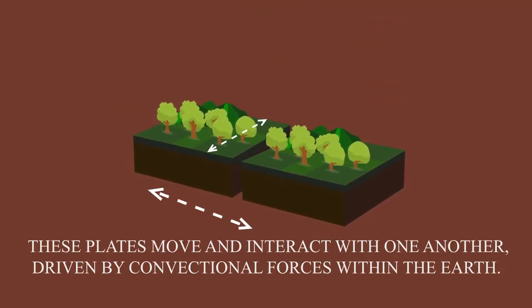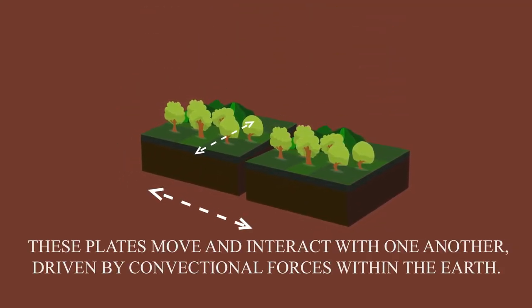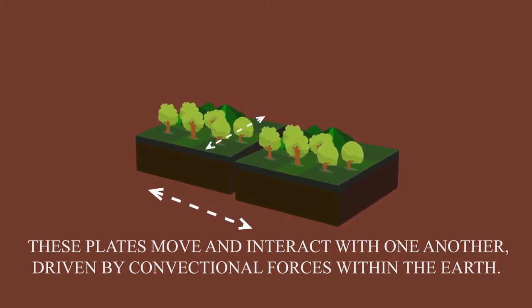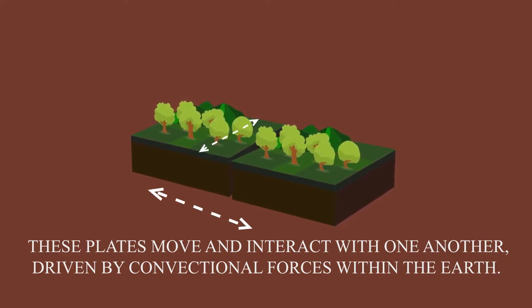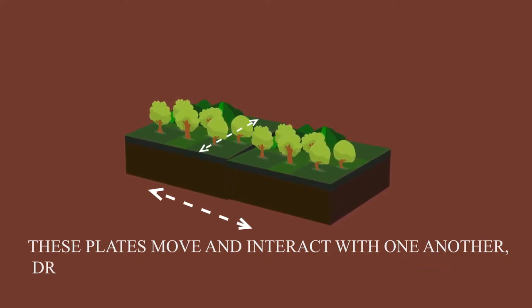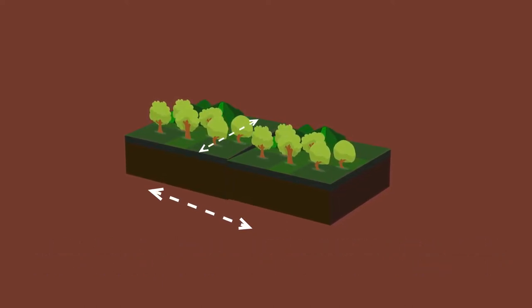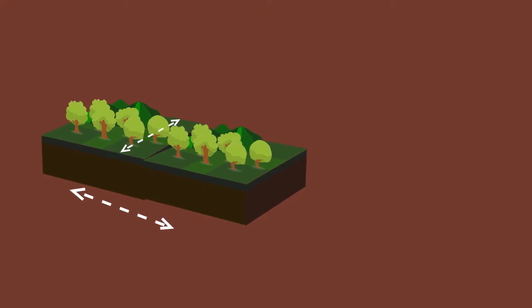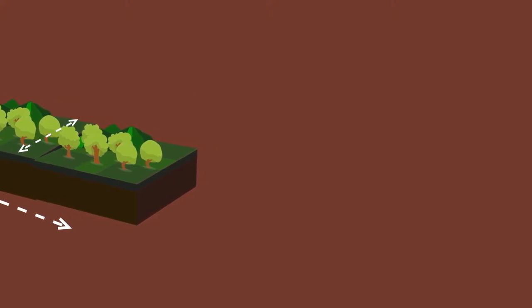The lithosphere is divided into a number of tectonic plates. These plates move and interact with one another, driven by convection forces beneath the earth. Plate tectonics theory explains the roughness and dynamics of the earth's interior.